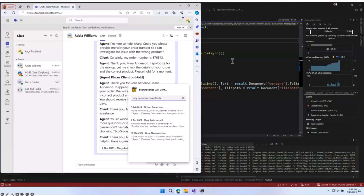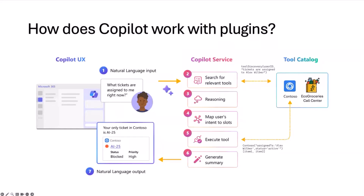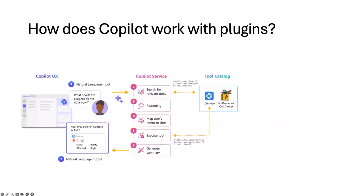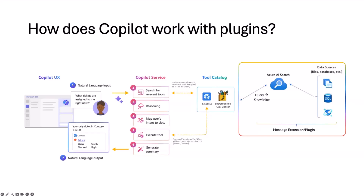The next step is testing this in Copilot. Before we jump into the Copilot experience, I want to highlight that Copilot works with plugins. Copilot is a UX with natural language input — once a user puts a prompt, Copilot searches inside the relevant tools, and our plugin will be part of the tool catalog. Once Copilot finds that the data can be related to a tool in the catalog, like Echo Groceries Call Center, it picks that tool, maps the intent, executes the tool, retrieves the response, and sends it back in an adaptive card format.